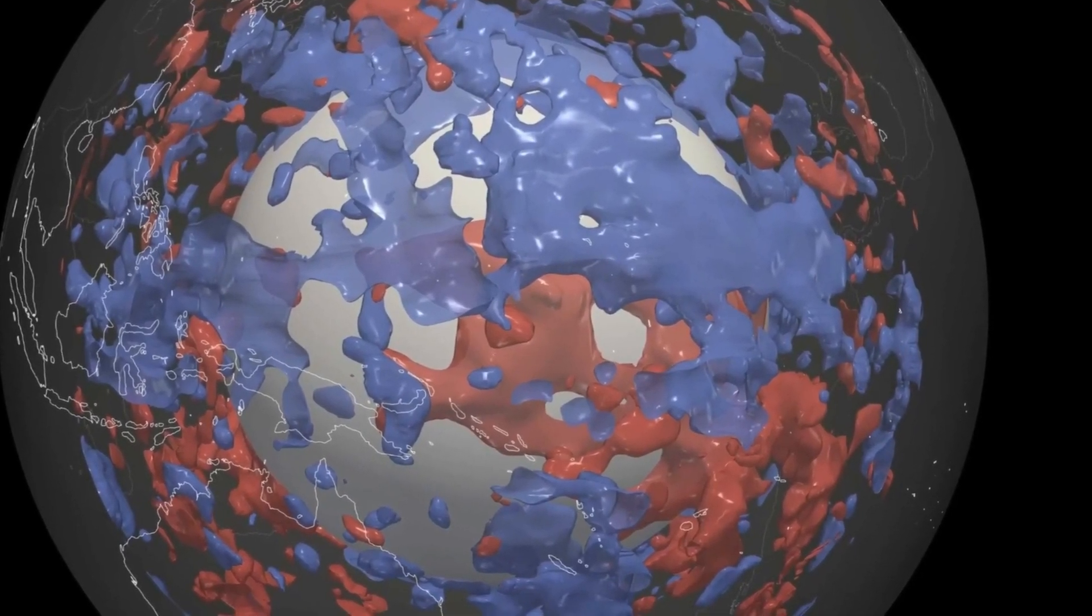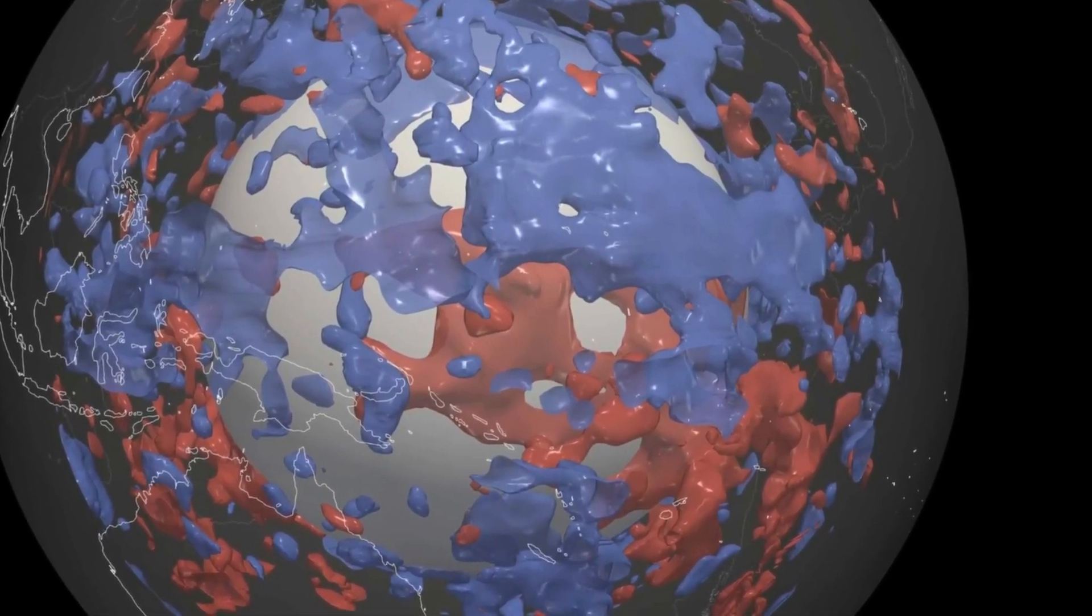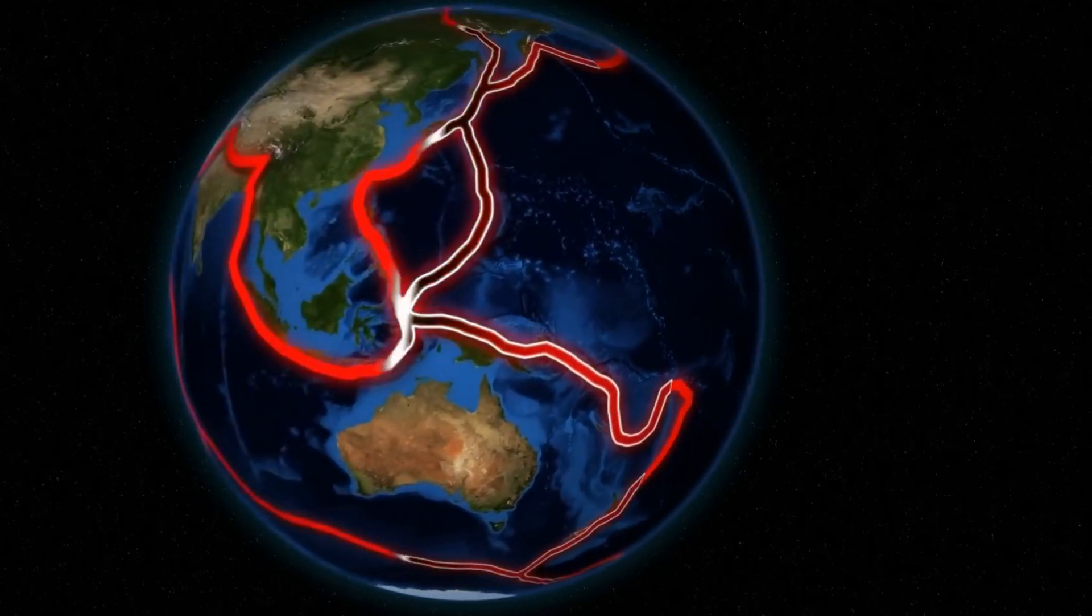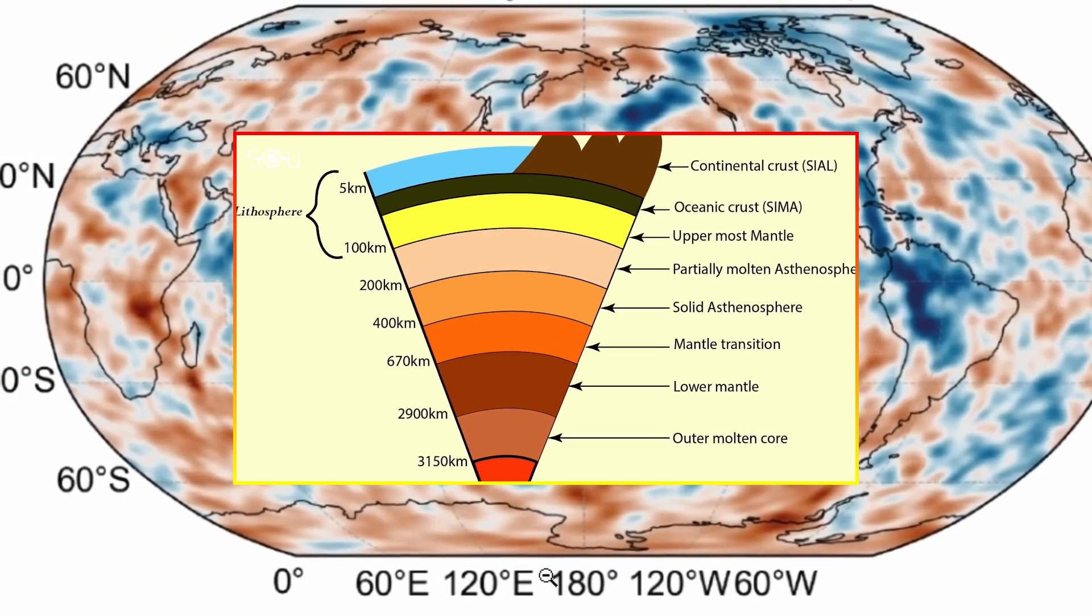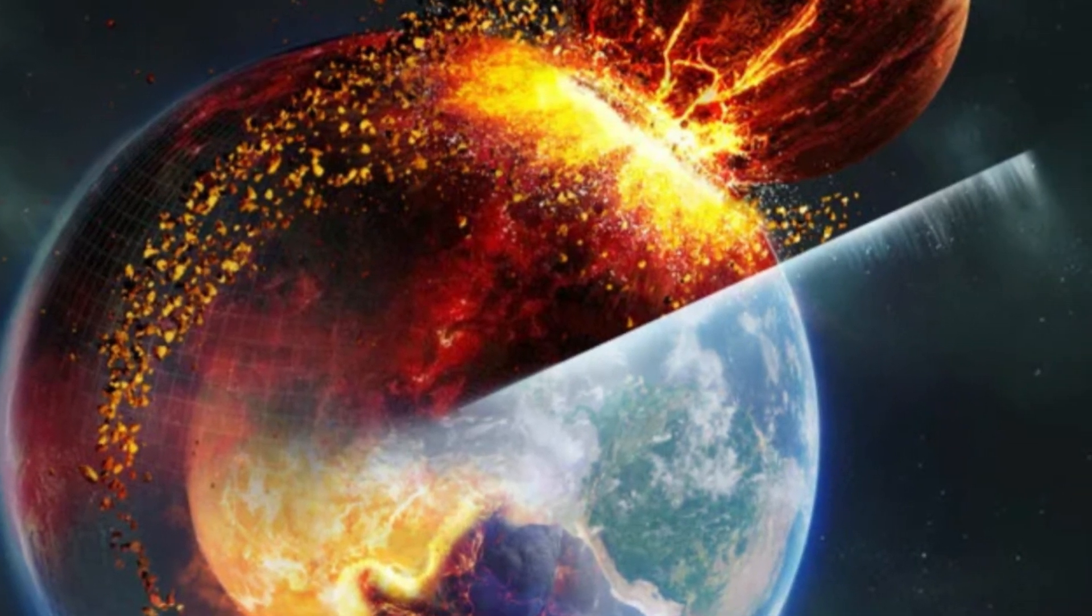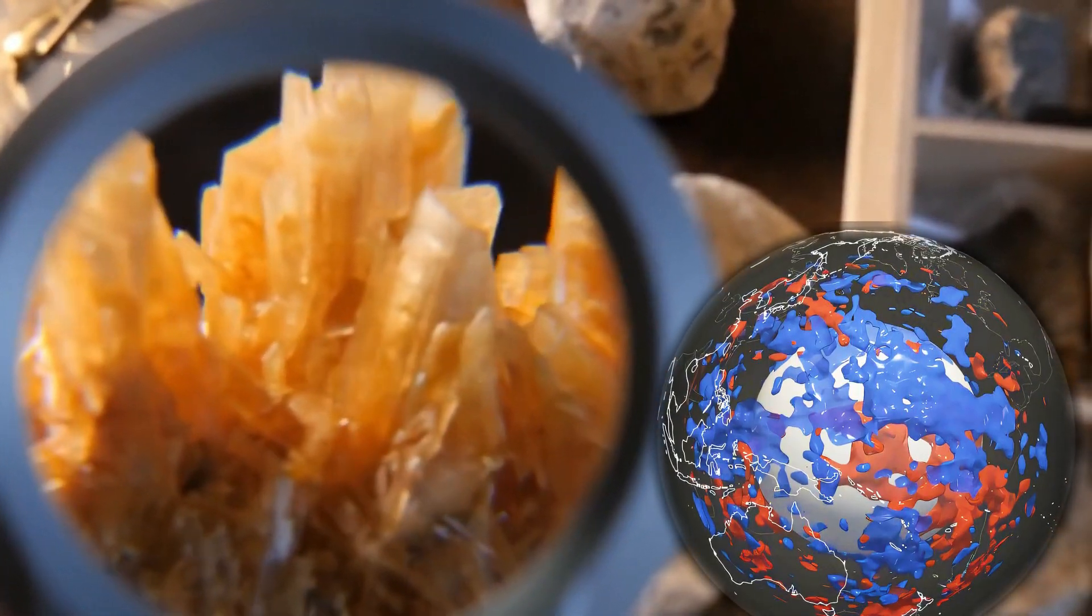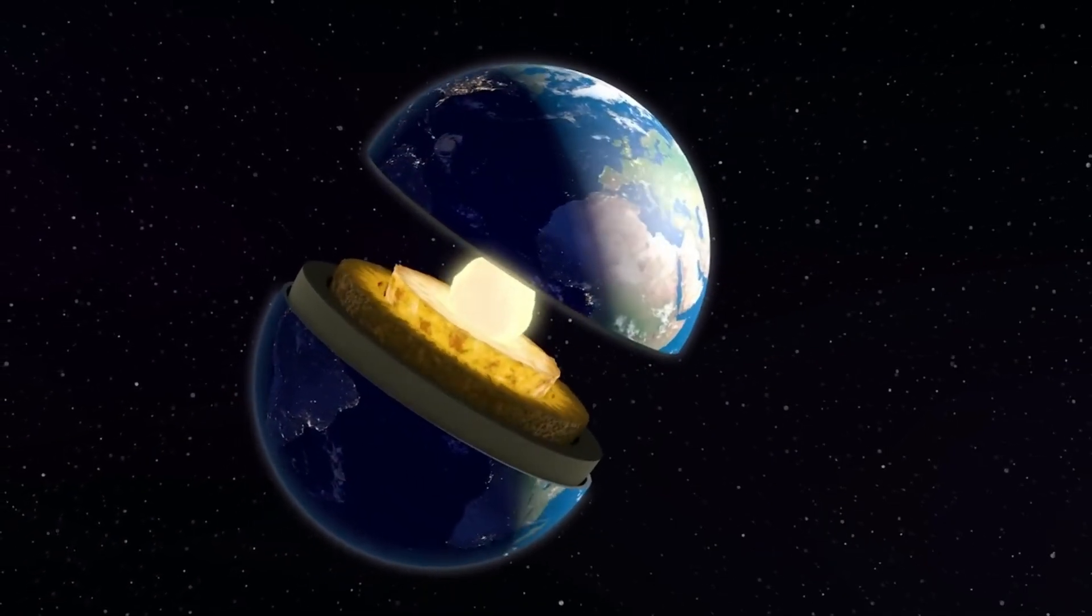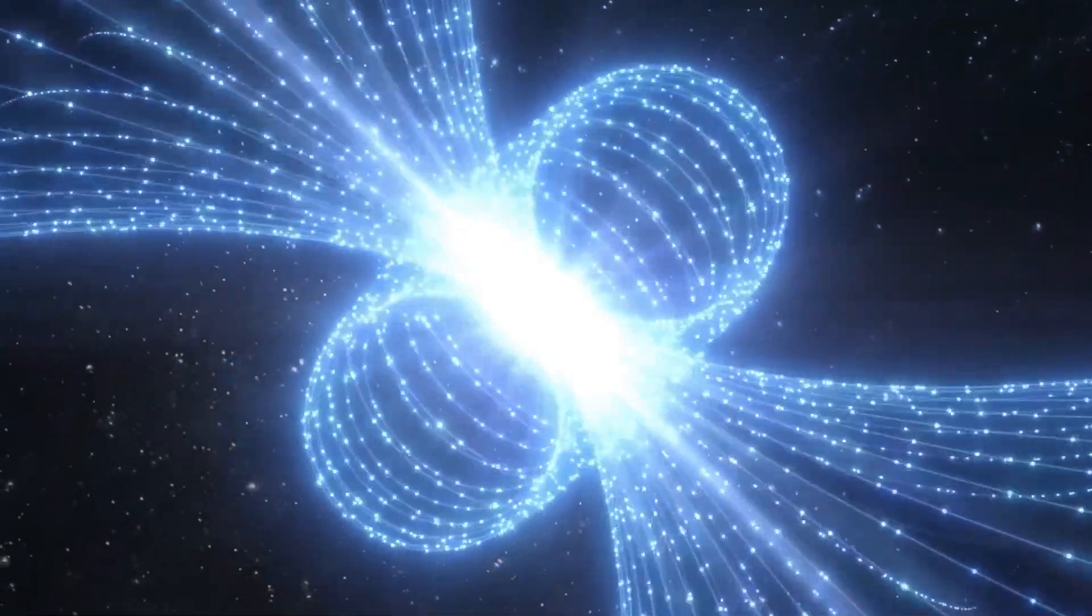What does this mean for Earth's future? Why should we care about these discoveries? The hidden structures beneath Earth's surface could drastically alter our understanding of the planet's geology, magnetic field, and seismic activity. Understanding how these features formed could provide crucial insights into Earth's past and offer new clues about its future. As scientists continue to collect data and analyze these anomalies, we may eventually uncover key aspects of Earth's evolution that have remained hidden for millennia. And who knows? These discoveries could lead to new ways of predicting seismic events, volcanic eruptions, or even changes in Earth's climate.